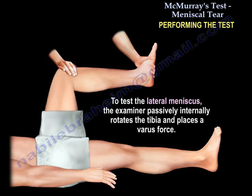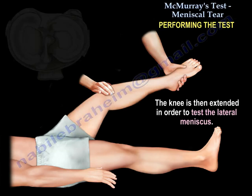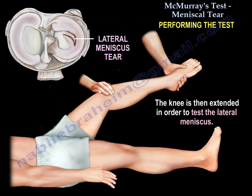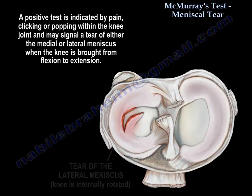To test the lateral meniscus, the examiner passively internally rotates the tibia and places a valgus force. The knee is then extended. A positive test is indicated by pain, clicking, or popping within the knee joint, and may signal a tear of either the medial or the lateral meniscus when the knee is brought from flexion to extension.